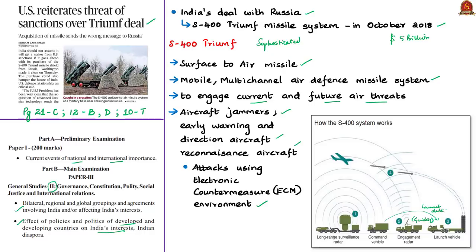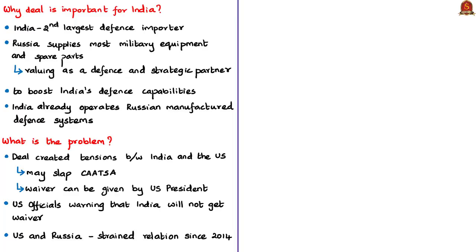Why is this deal important for India? India makes very few of its own weapons and is the world's second largest defense importer. Russia supplies most of India's military equipment and spare parts. India had to assure Russia that it still values Moscow as an important defense and strategic partner, hence signing the deal. Also, India's neighbor China has the same system — the two countries fought a war in 1962, and routine skirmishes occur over their borders. For India, boosting defense capabilities is imperative, and an air defense missile system is the need of the hour. The new system will enable the Indian Air Force to detect and destroy missiles. India already operates Russian-manufactured systems, so officials feel it makes sense to continue with familiar systems.